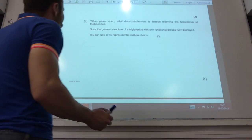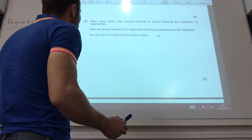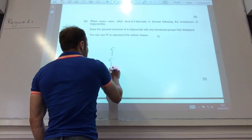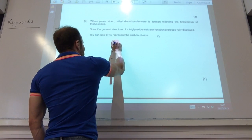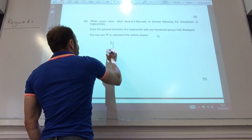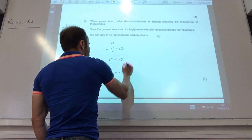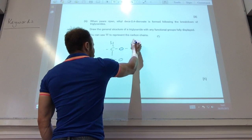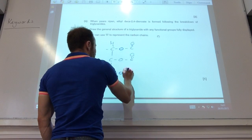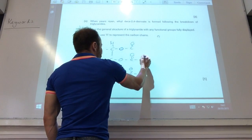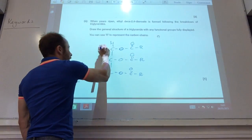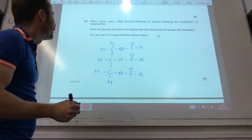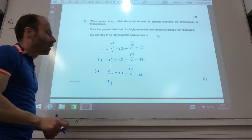Right, now I want to draw the general structure of a triglyceride. So a triglyceride is going to have three carbons in a casket group. They told me I could just represent the carbon chain with an R.